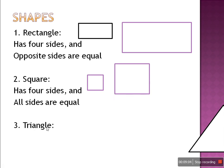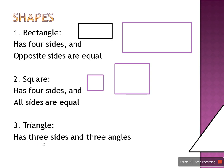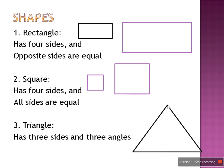Next: triangle. What is a triangle? Triangle means three. So a triangle has three sides and three angles. Look at this — triangle has three sides: first side, second side, third side. And three angles: first angle, second angle, third angle. So a triangle has three sides and three angles.